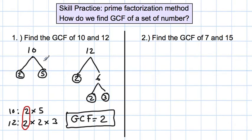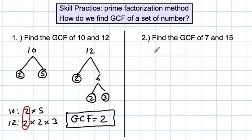Making a list for these would have been really easy. When the numbers are small, making a list is fine. It's also fine for larger numbers, but you have to know your divisibility rules in order to do that.